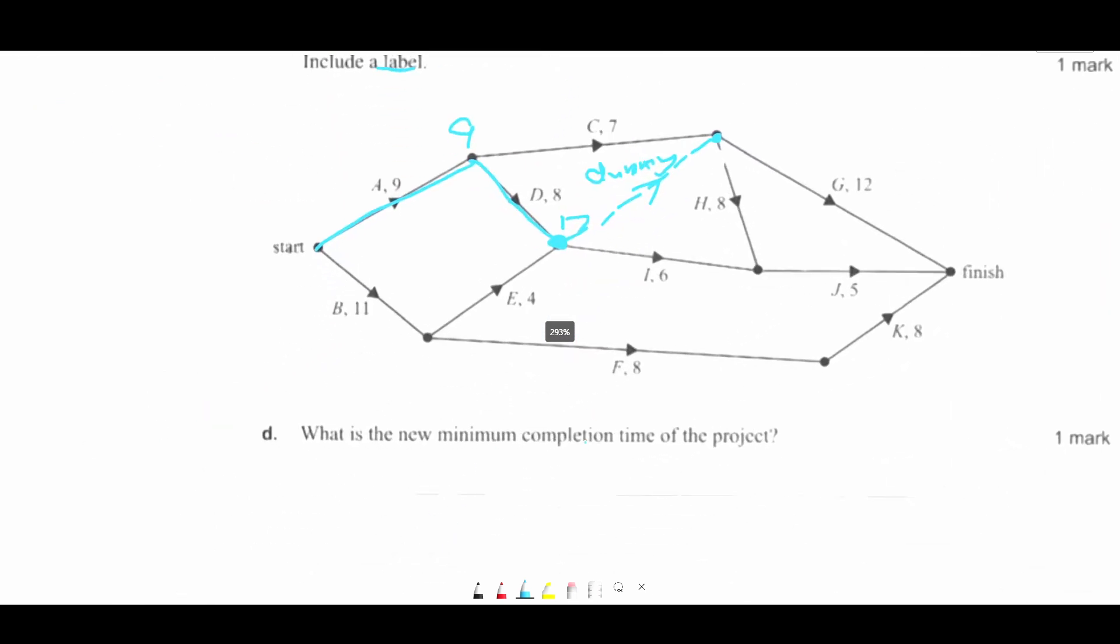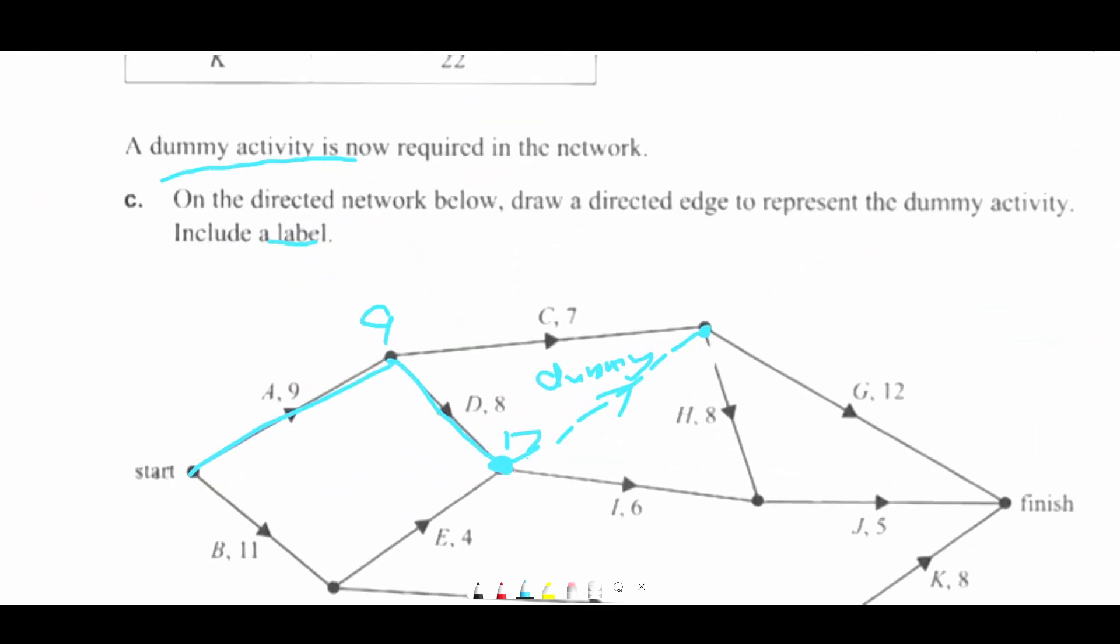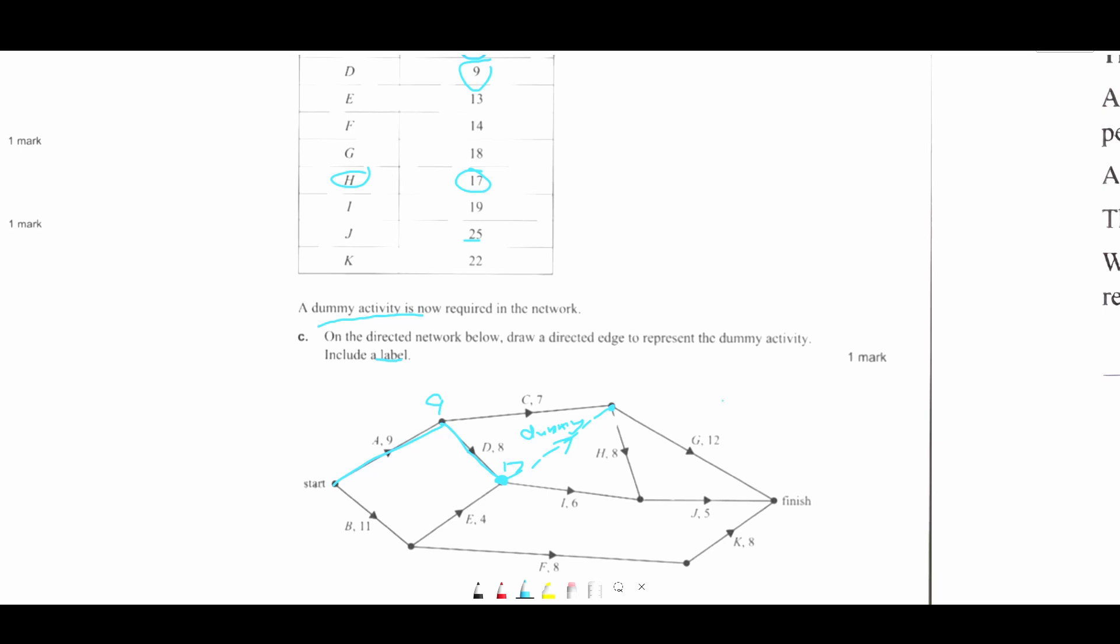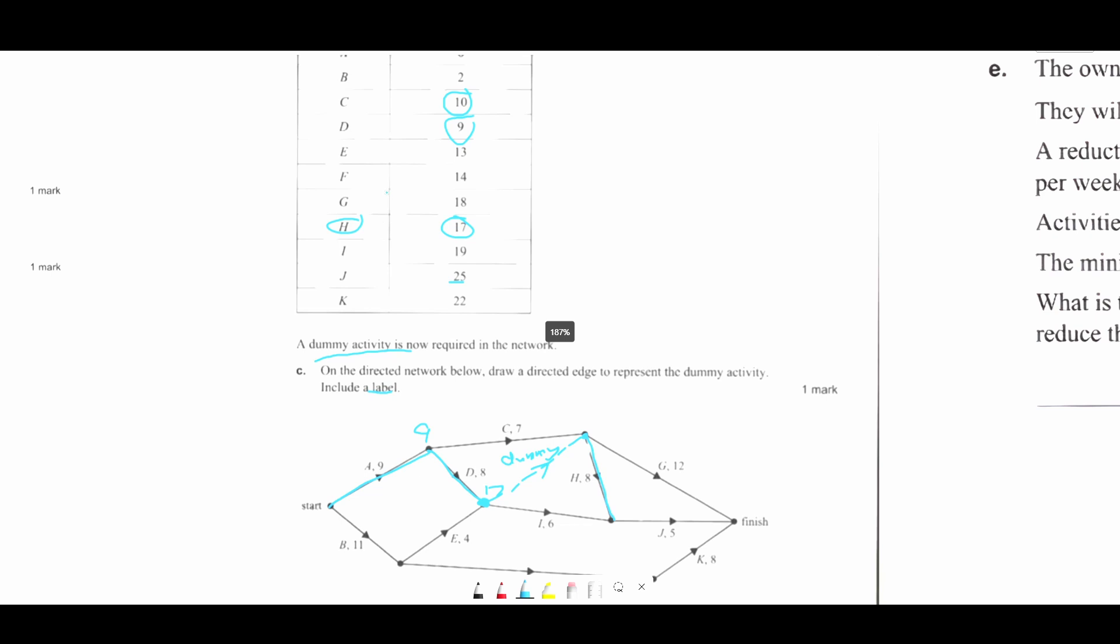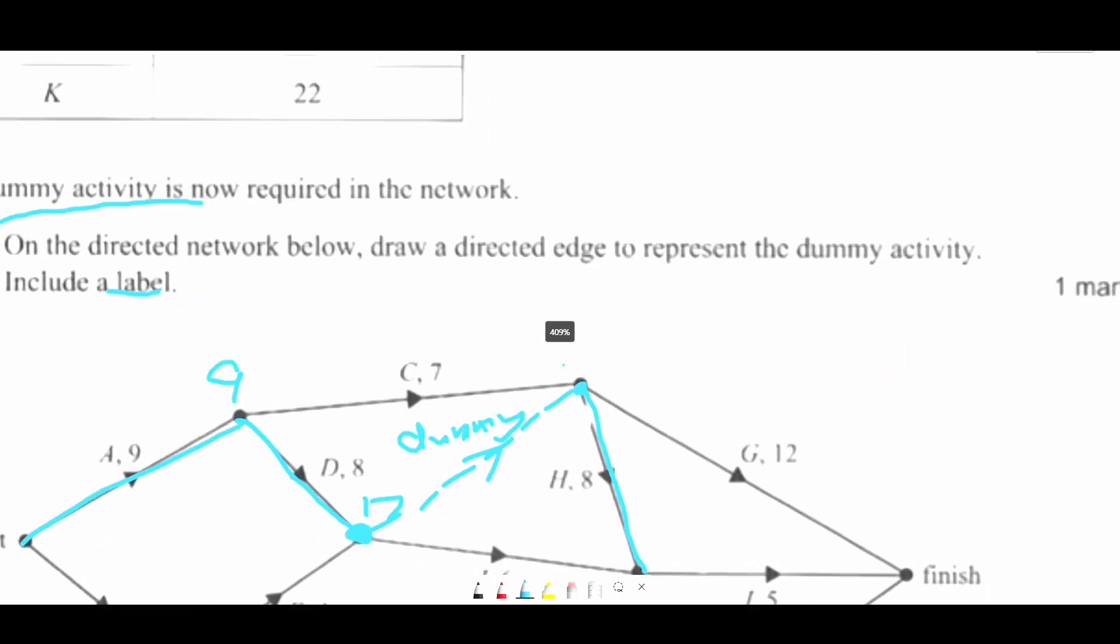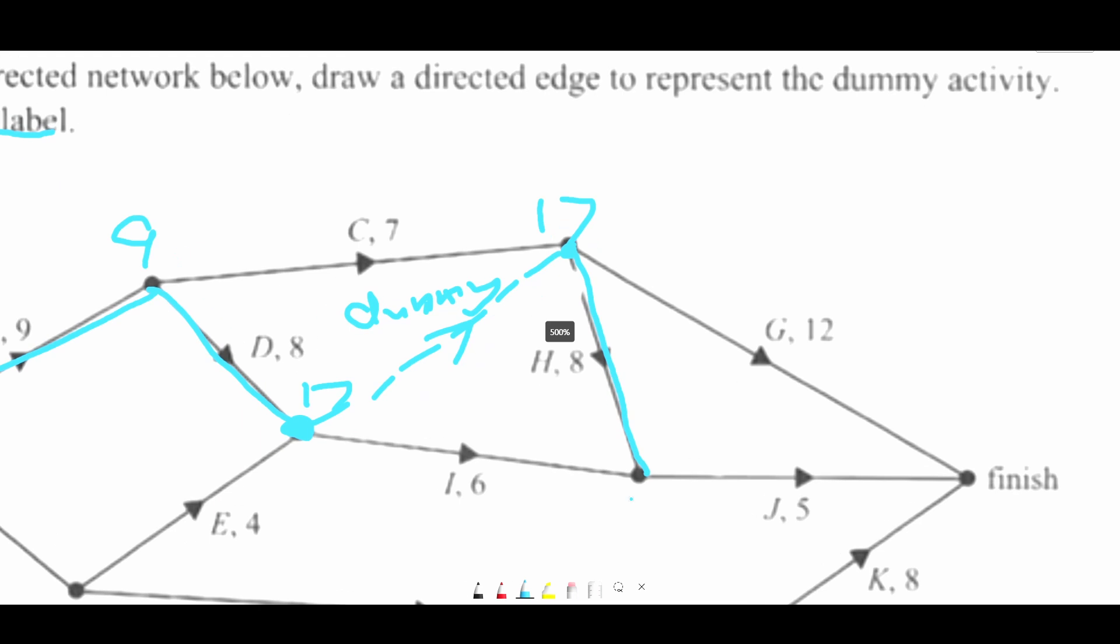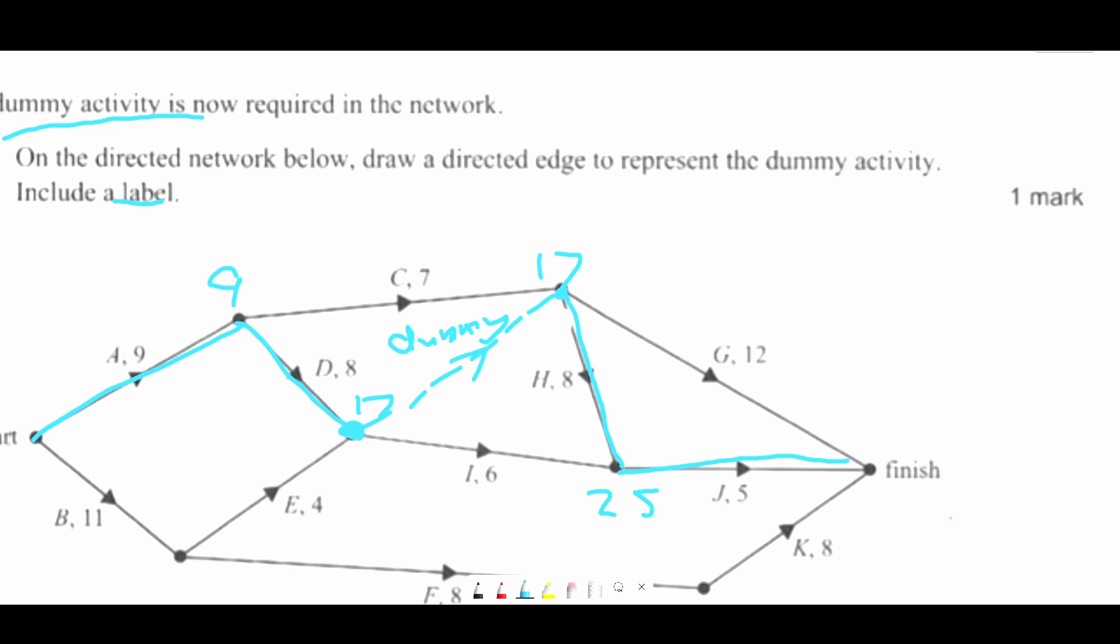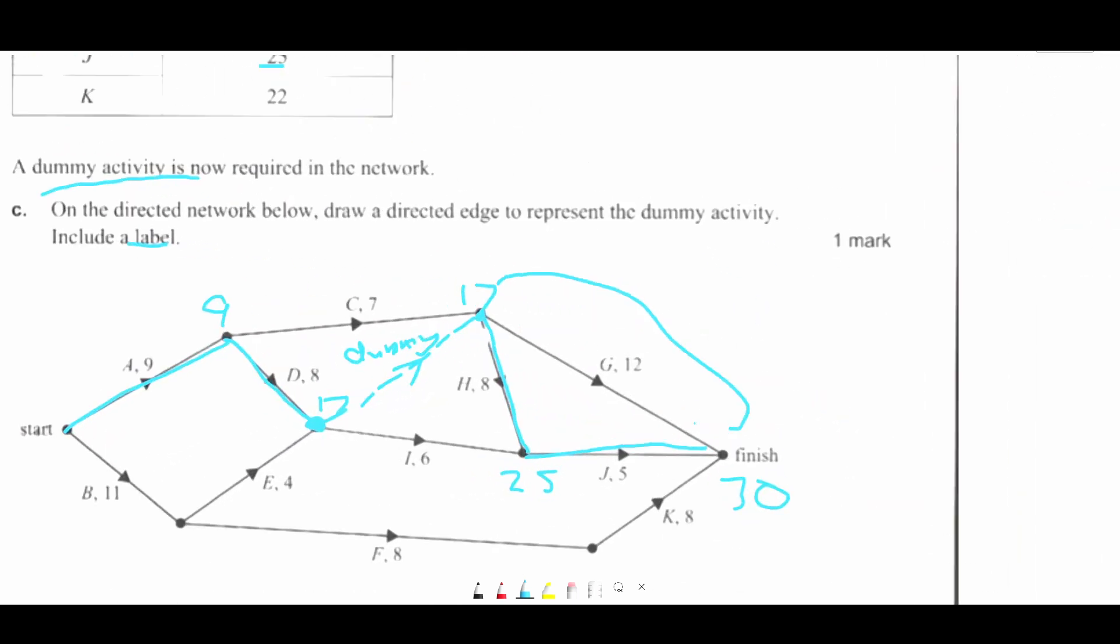What is the new completion time? So we know that this is the critical path. It goes down this way. So 17. So this 17 just gets transported up here. And 17 plus 8 is 25. And 25 plus 5 is 30. Are there any other possible critical paths? 17 plus 12 is 29. That is lower.